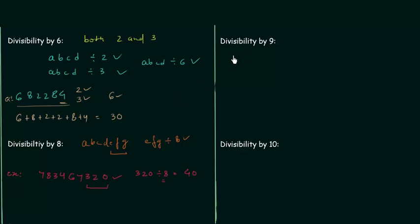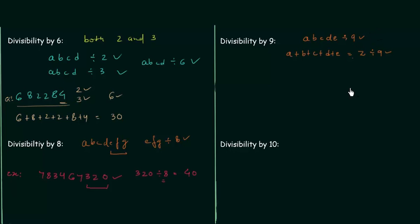Now divisibility by 9: a number is divisible by 9 if the sum of its digits is also divisible by 9. For number ABCDEFG, compute A + B + C + ... = Z; if Z is divisible by 9, then the number is too. Take 2736: 2 + 7 + 3 + 6 = 18, and 18 is divisible by 9. You can add again: 1 + 8 = 9, which is divisible by 9. So 2736 is divisible by 9.